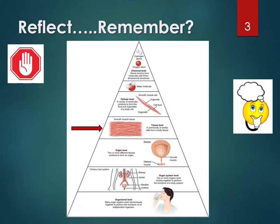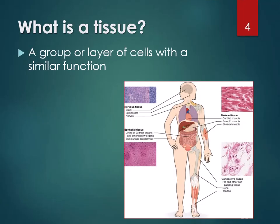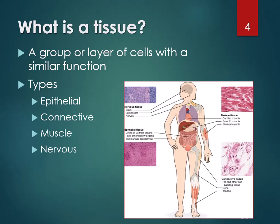If you remember the very first lecture in Unit 1, we talked about the organization of anatomy and physiology. We did chemistry in Unit 2 and just finished cells in Unit 3. We are now doing tissues, which is basically a group of cells that have the same function. There are four types of tissue in the human body: epithelial, connective, muscle, and nervous.